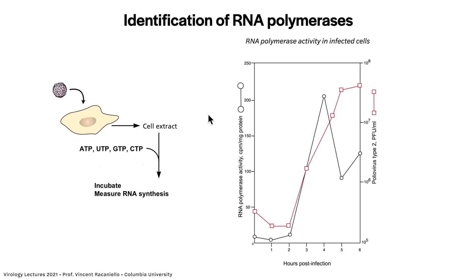How were RNA polymerases identified? RNA-dependent RNA polymerase — that's the term I'm going to use for viral enzymes that copy viral RNA. What people did was infect cells with a virus, then at different times after infection, they cracked the cells open, made a cell extract, and added the four triphosphates needed to make RNA: ATP, UTP, GTP, and CTP. One of these was radioactive, and then they would incubate this and measure RNA synthesis.